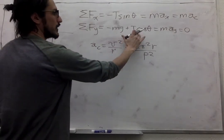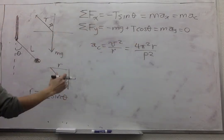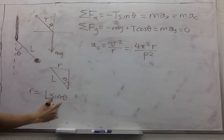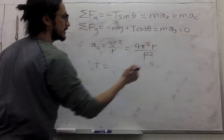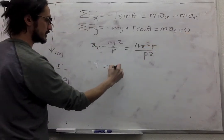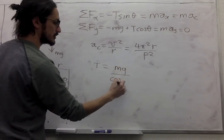We can solve for T from the forces in Y equation. So this is 0. So T is going to be plus mg over cosine theta.